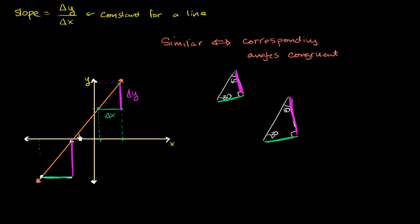So let's try to prove similarity. The first thing we know is that both of these are right triangles. These green lines are perfectly horizontal and these purple lines are perfectly vertical — the green lines go in the horizontal direction and the purple lines go in the vertical direction. So we know that these are both right angles. We have one corresponding angle that is congruent. Now we have to show that the other ones are, and we can do that using our knowledge of parallel lines and transversals.